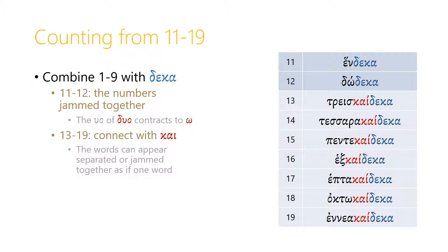From 13 to 19, we connect the first number with the second number, with deca, by the conjunction chi. And the words can either appear separately, or they can, as I've done here, be jammed right together as a single word. So 13 is treskchideca, 14 is tessarchideca, 15 is pentchideca, 16 is hexchideca, 17 is heptchideca, 18 is octochideca, and 19 is enechideca.